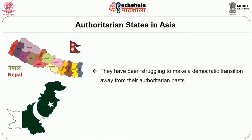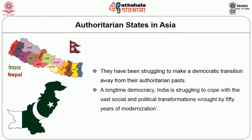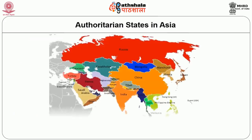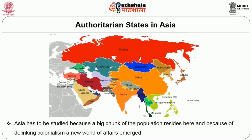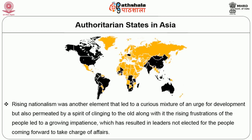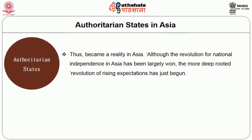Nepal and Pakistan have been struggling to make a democratic transition away from their authoritarian past. India, a long-time democracy, is struggling to cope with the vast social and political transformation wrought by 50 years of modernization. Asia must be studied because a large chunk of the world's population resides here, and because of decolonization a new world of affairs emerged. Rising nationalism led to a mixture of urge for development alongside clinging to the old, and growing impatience resulted in unelected leaders coming forward to take charge. Authoritarian states thus became a reality in Asia.